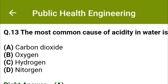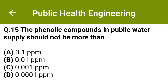The most common cause for acidity in water is: option A: carbon dioxide, option B: oxygen, option C: high hydrogen, option D: nitrogen. The correct answer is option A: carbon dioxide. The phenolic compounds in public water supply should not be more than: option A: 0.1 ppm, option B: 0.01 ppm, option C: 0.001 ppm.